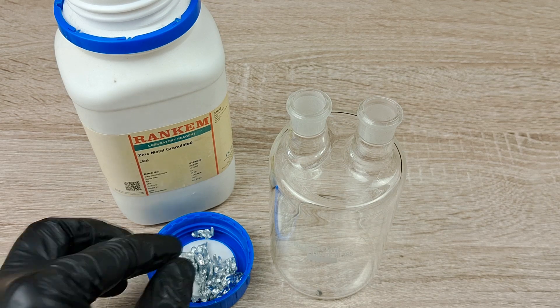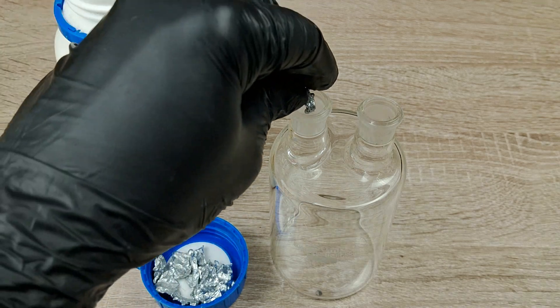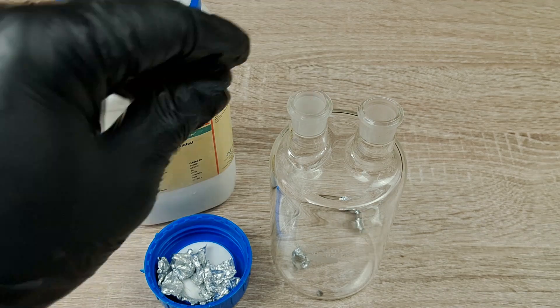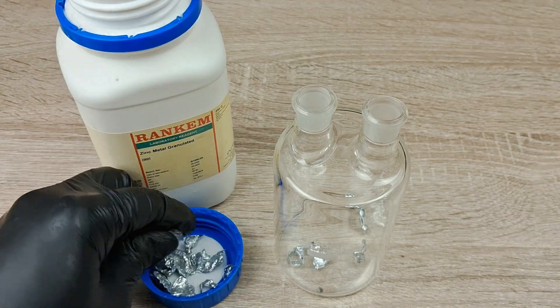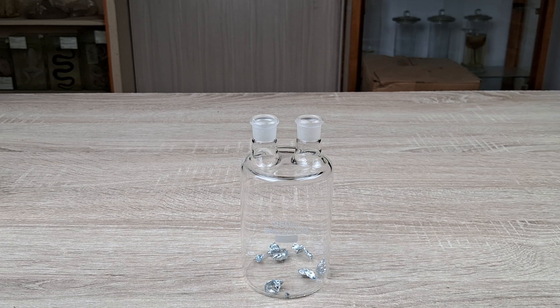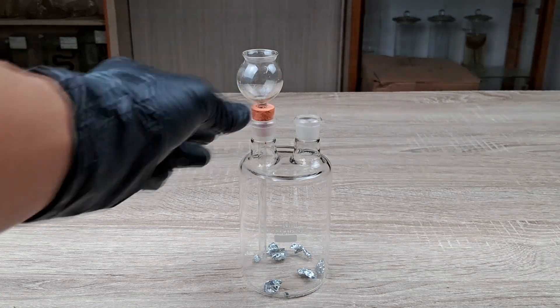To begin the experiment, first introduce a few pieces of zinc granules into the Wolf bottle or whichever type of bottle you're using. Next, stopper the two holes of the bottle with the rubber corks pre-inserted with the thistle funnel and the delivery tube.